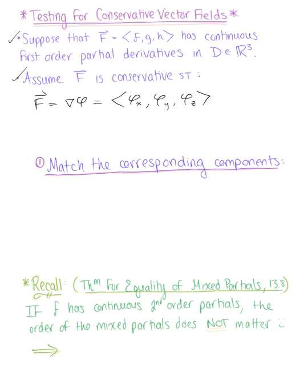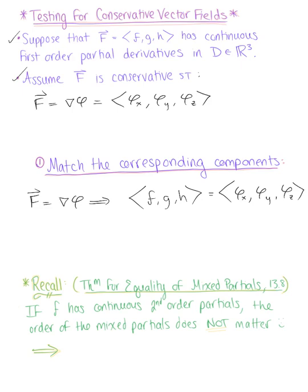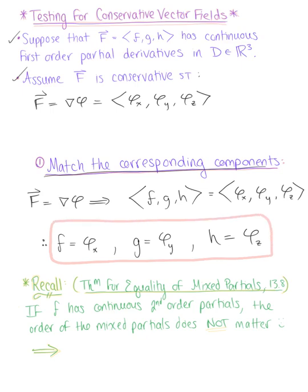From here, to establish this test, we're going to match the corresponding components. Since we know that our vector field is equal to the gradient of phi, this implies that the vector F, G, H is equal to the gradient of phi — so we have phi_x, phi_y, and phi_z. Therefore, F equals the partial derivative of phi with respect to x, G equals the partial derivative of phi with respect to y, and H equals the partial derivative of phi with respect to z. These are our three matching components that are important as we proceed.